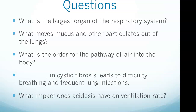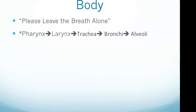Some of the topics we'll cover: What is the largest organ of the respiratory system? What moves mucus out of the lungs? What is the order for the pathway of air into the body — a very common question. What in cystic fibrosis leads to difficulty breathing and frequent lung infections? And what effect does acidosis have on ventilation rate?